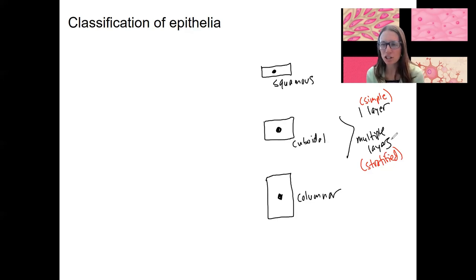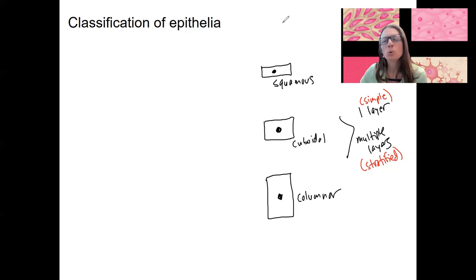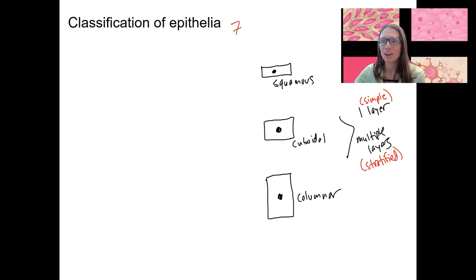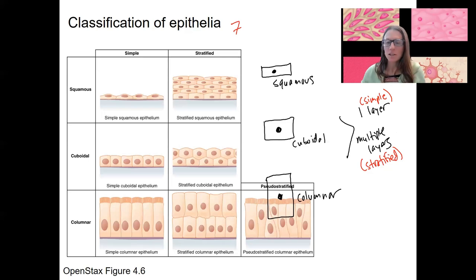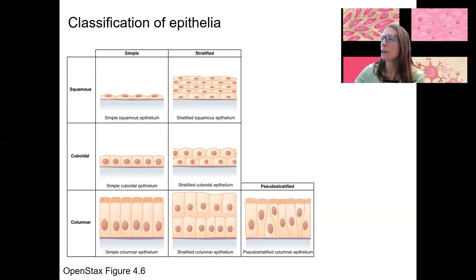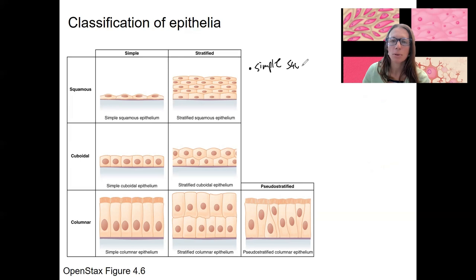There are at least six combinations here, and also two others, giving us seven classifications of epithelial tissue. There is simple squamous epithelium, and there's stratified squamous epithelium.